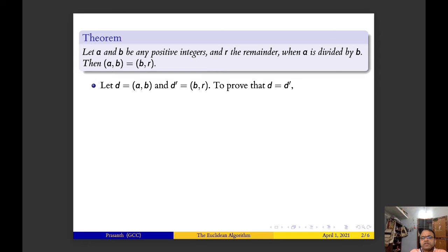Let us briefly see the outline of the proof. Let d equal (a,b), that is d is the gcd of a,b, and d' be the gcd of b,r. We will prove that d is equal to d'. To show that d equals d', it is enough if we prove that d divides d' and d' divides d.